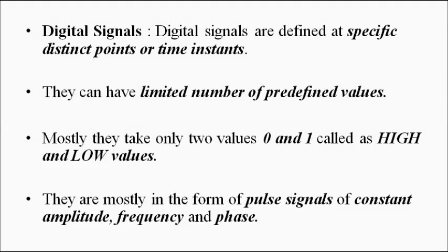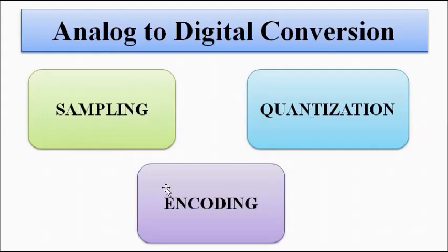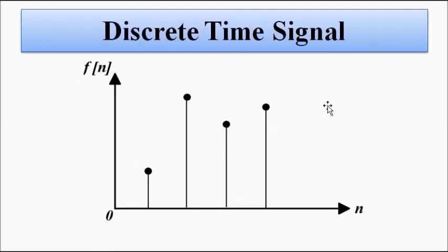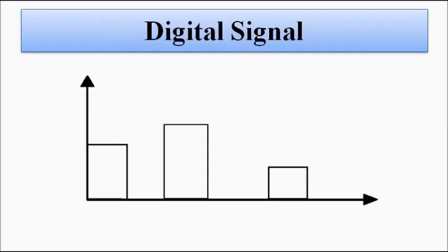There is a whole process involved in the conversion of analog signals to digital signals, which involves three steps: sampling, quantization, and encoding. In the sampling process, samples of the signal are taken at specific points defined by the Nyquist criteria, converting it into a discrete time signal. Through quantization and encoding, it is converted into a pulse signal.